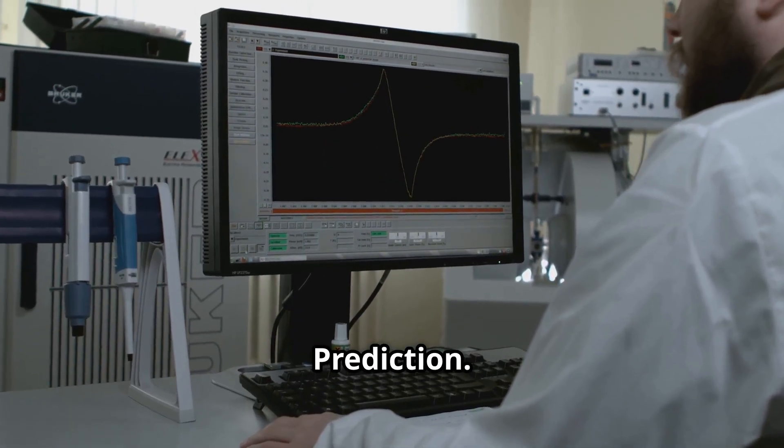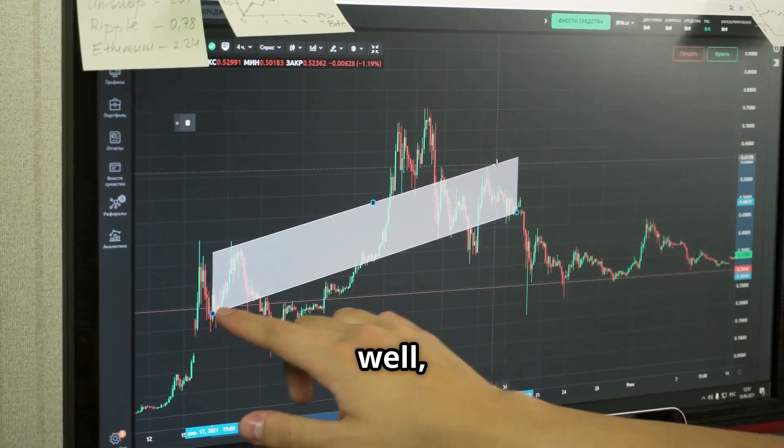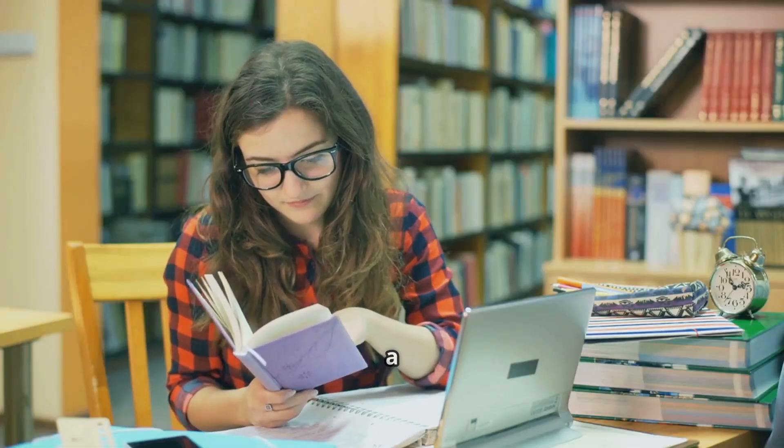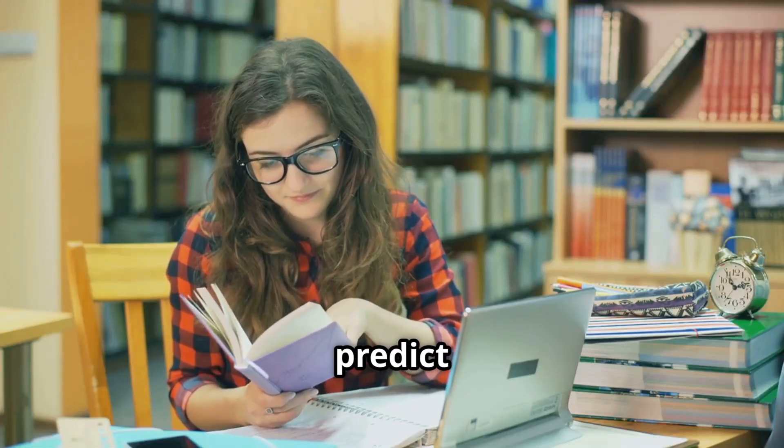The next level is prediction. Once we describe behaviors well, we can look for patterns. For example, if a student studies hard, they might predict a good grade.